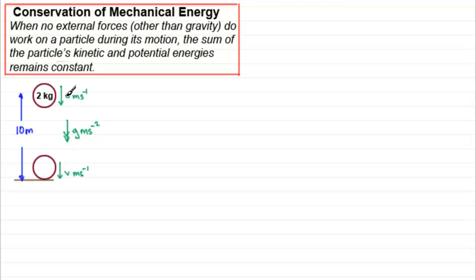Now, in the past we've done questions like this using the Suvat equations, as I call them, when you've got constant acceleration. What I'll do in this tutorial is run through how you can use the Suvat equations to find that velocity that it hits the ground at. But what I want to do first is show you how you can use this law here, the principle of the conservation of mechanical energy.